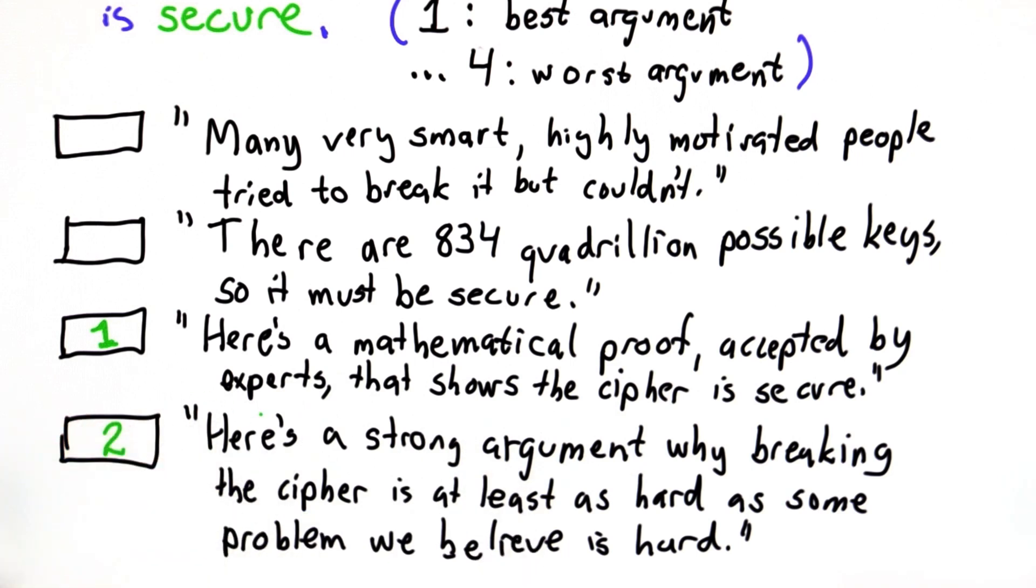The basic premise here is that there's some other problem that we have good reasons to believe is already hard, and then we're going to show that if we could break the cipher, we could solve that other problem that we already have good reasons to believe is hard.